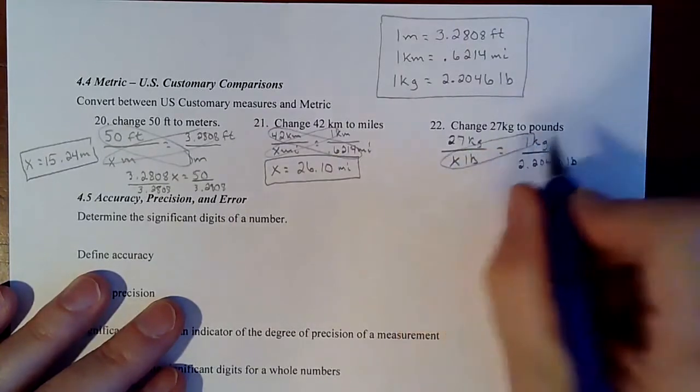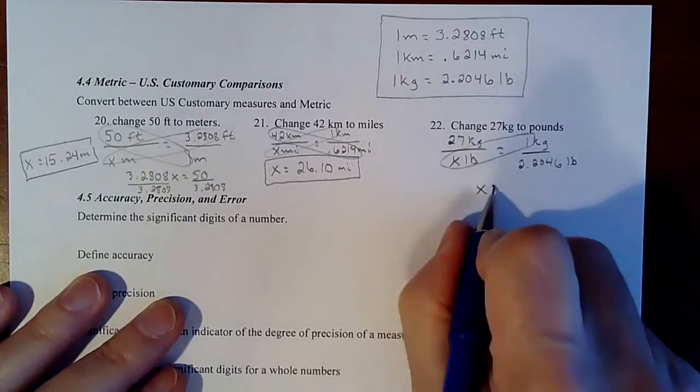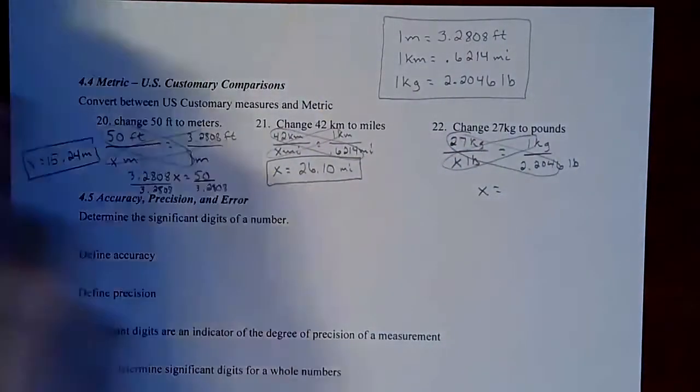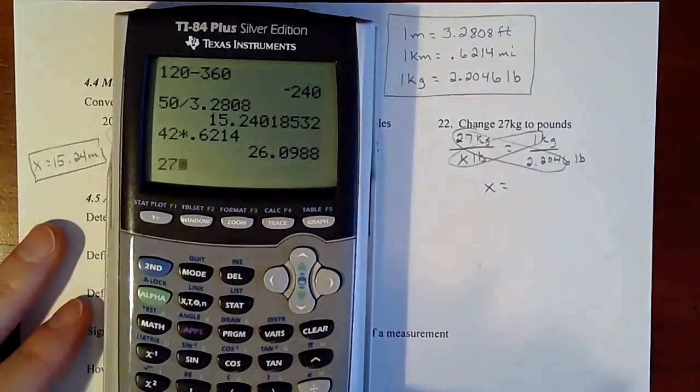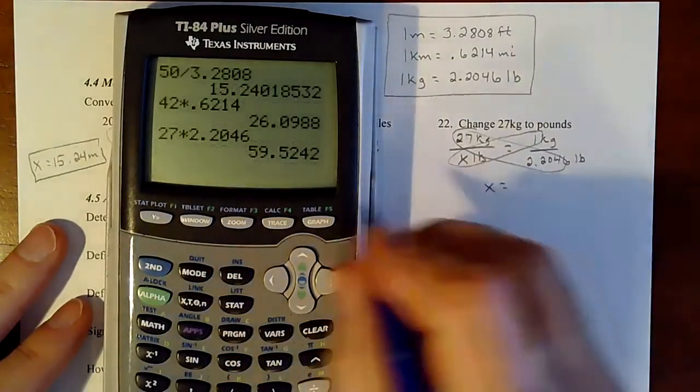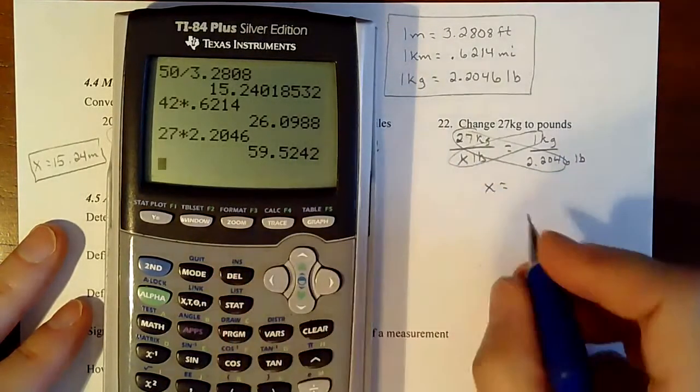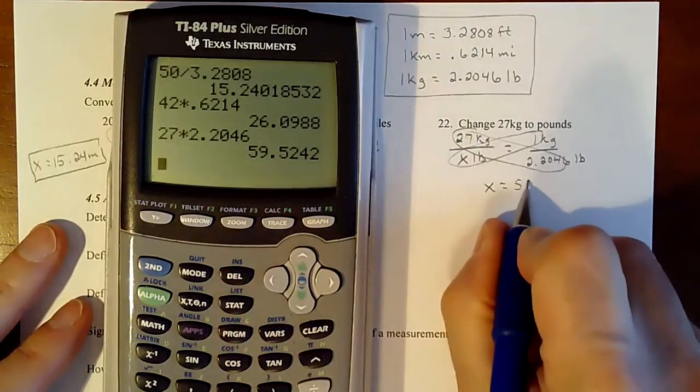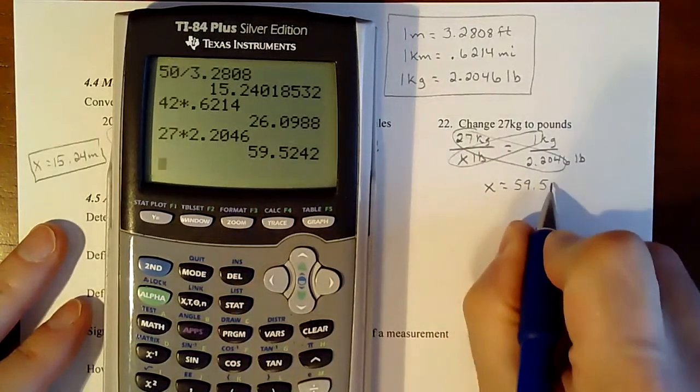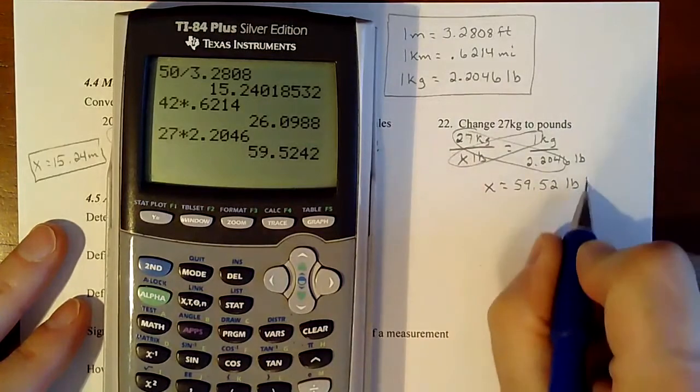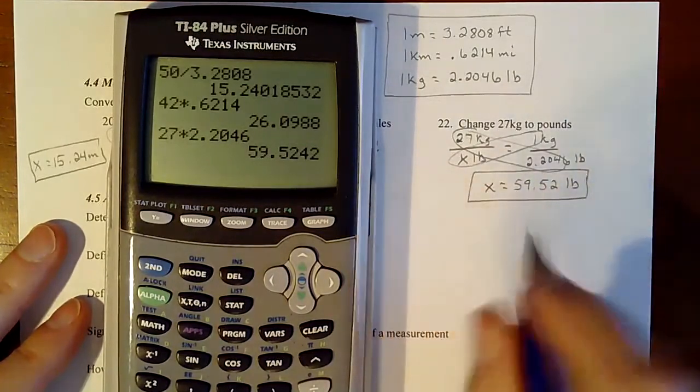Let's cross multiply. One times x is x. And then 27 times that, 27 times 2.2046, so that four is not going to bump up that two. So it's 59.52. And then our label would be pounds.